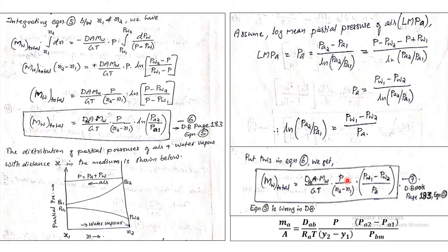Here PW1 is the partial pressure of water vapour at the interface, PW2 is at the top of the tank, and PA_bar (PBM) is the logarithmic mean partial pressure of air equal to (PA2 minus PA1)/ln(PA2/PA1). MW is molecular weight of water vapour, A is cross-section area, DAB is diffusion coefficient, G is universal gas constant, and T is the system temperature. Note: the equation in data book page 193 has a missing term; the correct equation includes the factor P. In data book notation: mA/A equals DAB/(RA·T) times P/(y2 minus y1) times (PA2 minus PA1)/PBM.